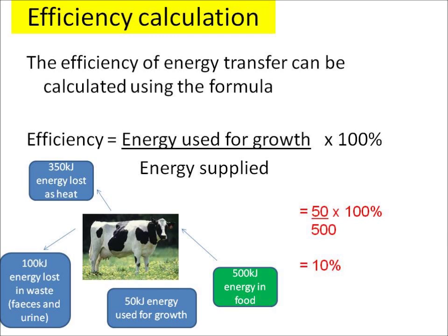Efficiency equals energy used for growth, divided by the energy supplied — the energy going in — times 100%. In this example, the cow eats 500 kilojoules of energy, and 50 kilojoules is being used for growth, so the sum is 50 divided by 500 times 100%, which comes to 10%.